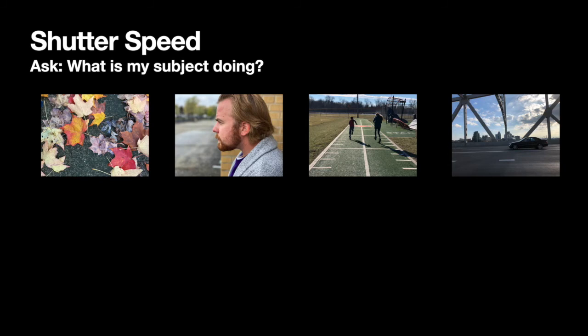Let's think of our subject doing four different things. You have still life objects or scenes, portraits of people sitting, people in action, or an engine in motion like a car driving. I'm going to give you four key shutter speeds to memorize. For still objects or scenes: 1/60th of a second. For portraits: 1/125th of a second. For people in action: 1/250th. And for engines in motion: 1/500th.